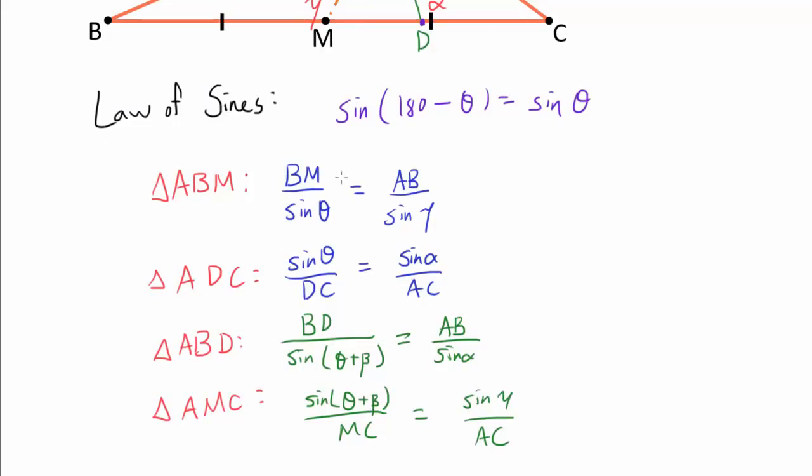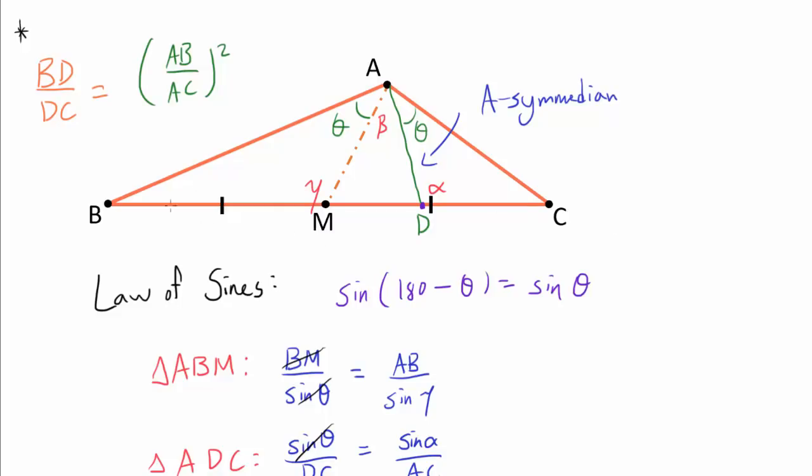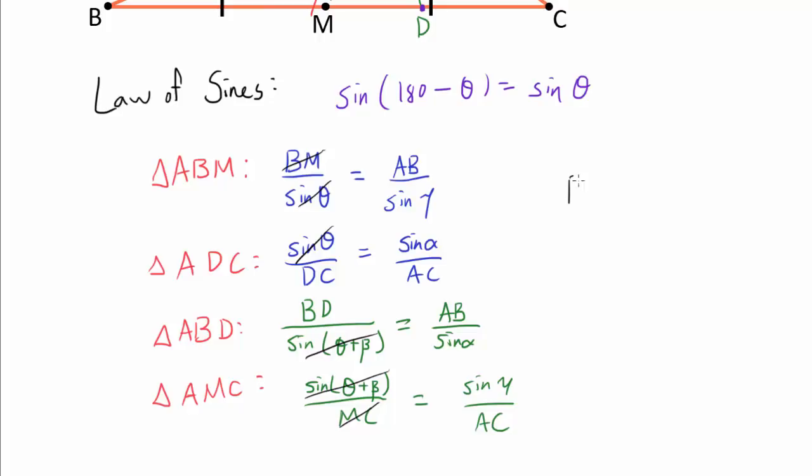And now the only thing left for us to do is to multiply every expression on the left hand side and multiply every expression on the right hand side. For the left hand side, sine of thetas are going to go away. Sine of theta plus betas are going to go away. And BM and MC are going to go away as well because M is the midpoint of side BC. BM and MC are the same. So the only thing that's left on the left hand side is BD over DC. On the right hand side, sine of gammas and sine of alpha are going to cancel out. But we're going to have two ABs on top and two ACs down below. So we get AB over AC squared and we have proven our desired assertion.